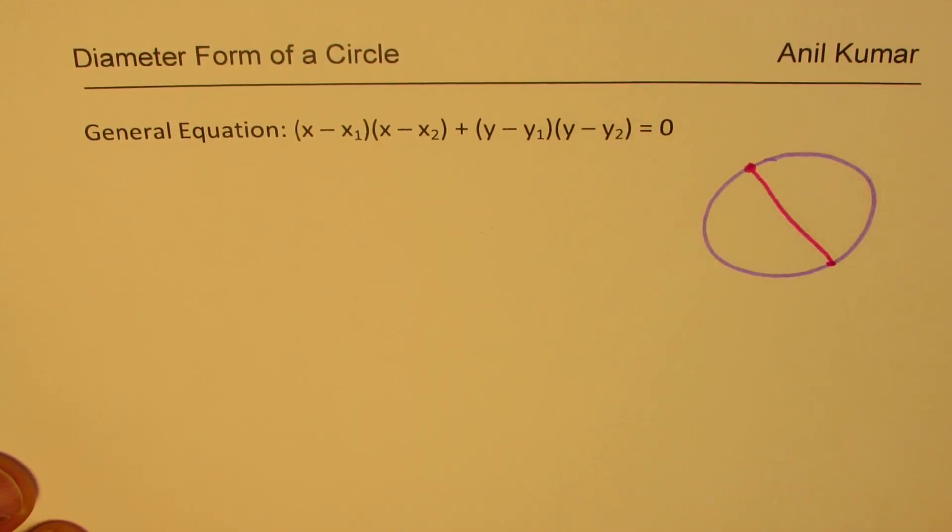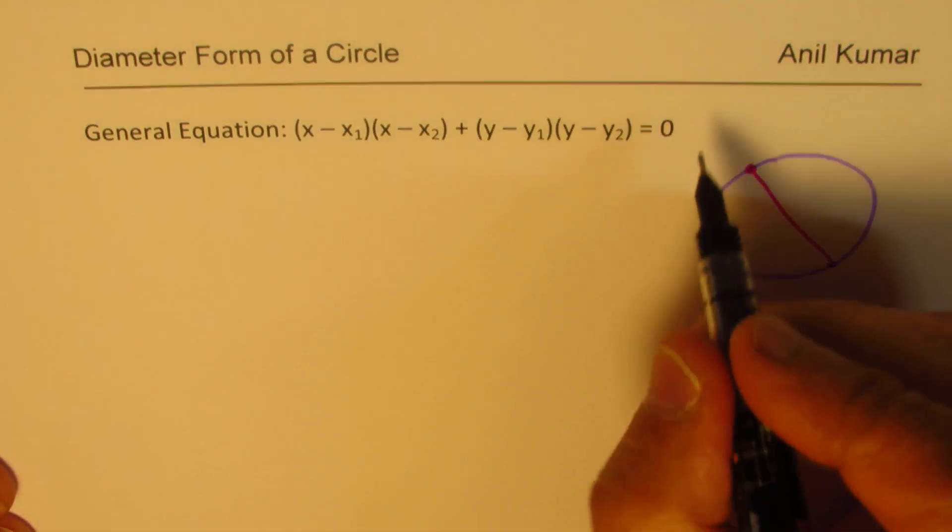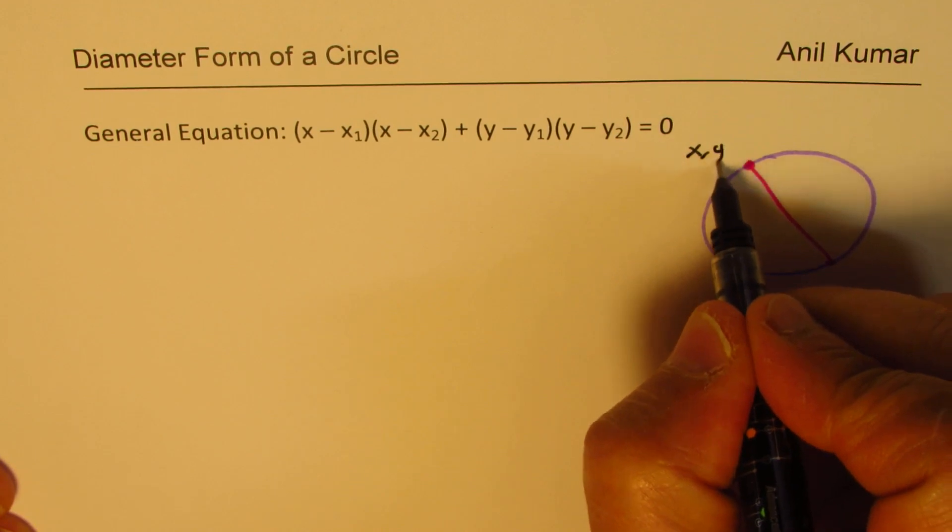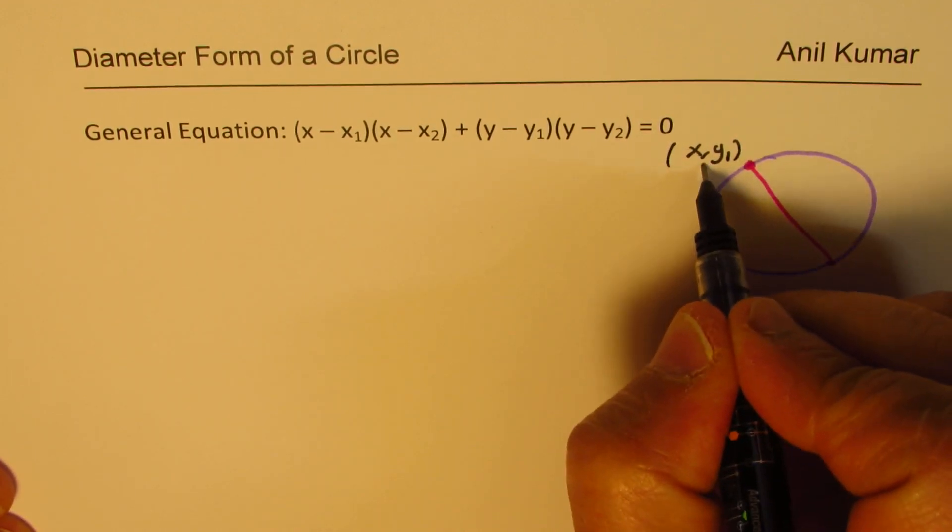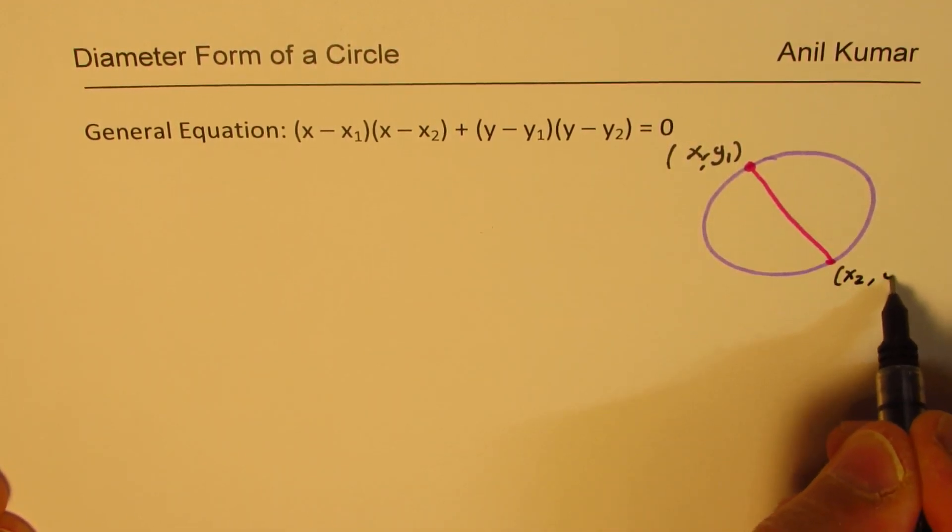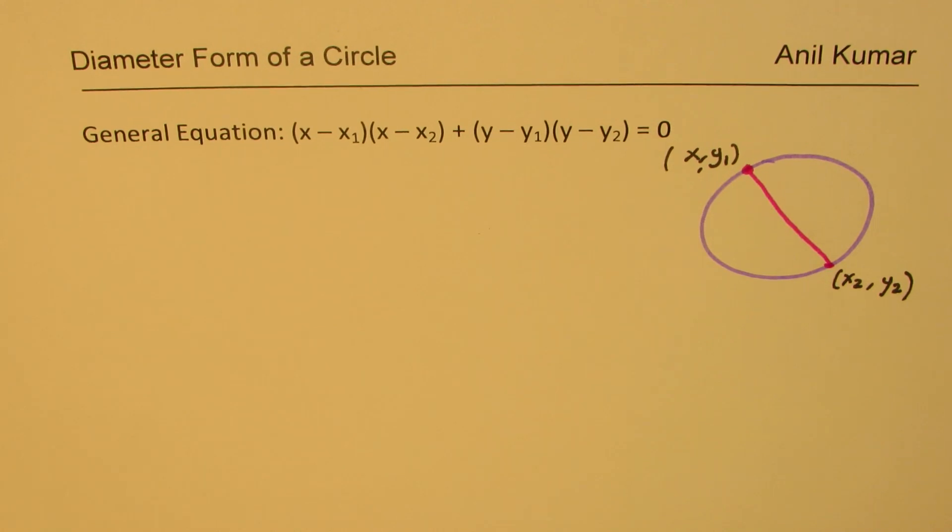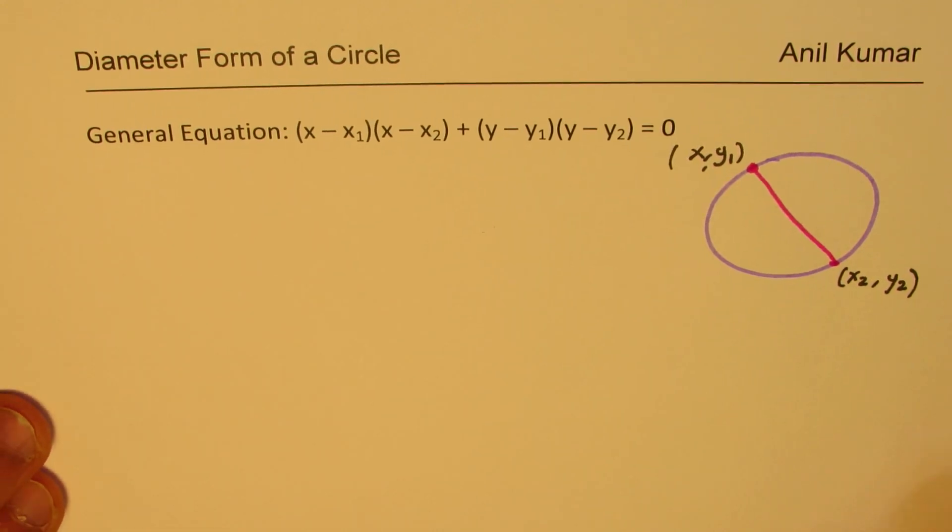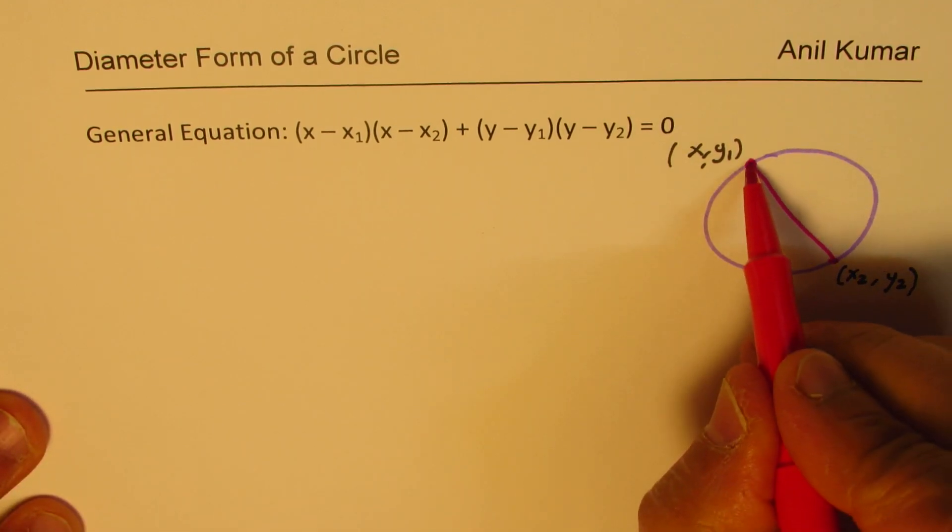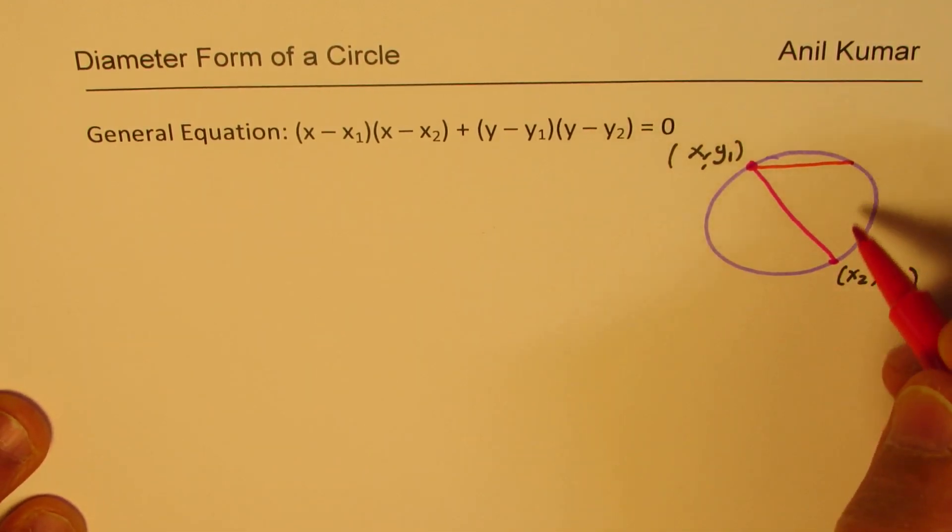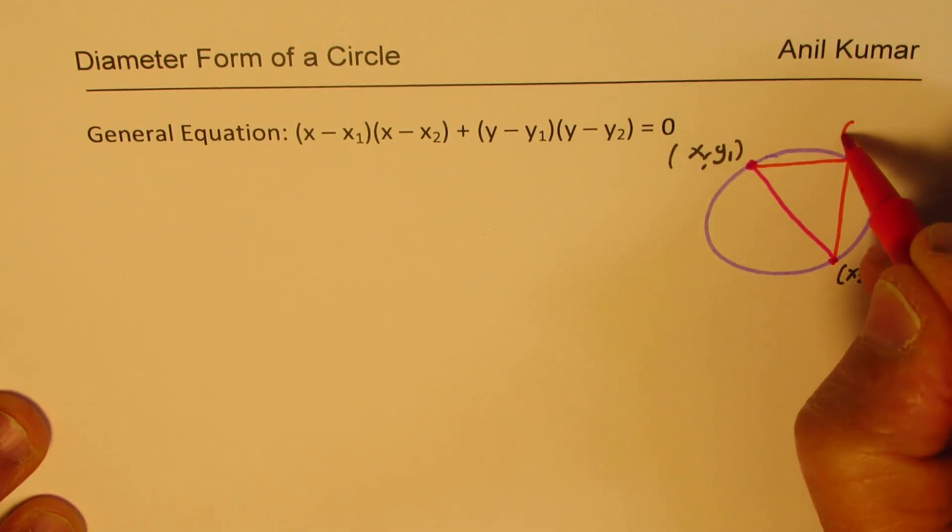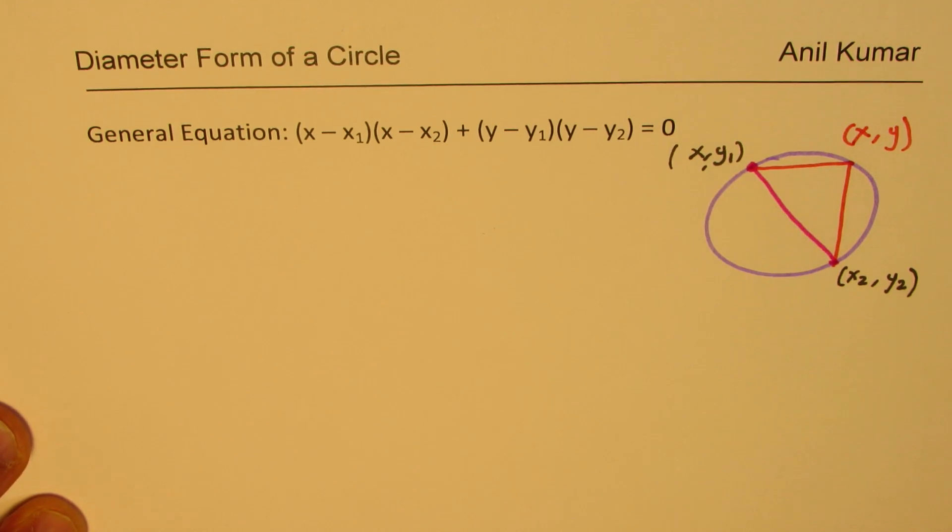So these are my two endpoints. Let these endpoints be x1, y1 and x2, y2. In that case any point on the circle, let that be x, y. So let's consider set of points on the circle to be x, y. So this point is a general point on the circle.